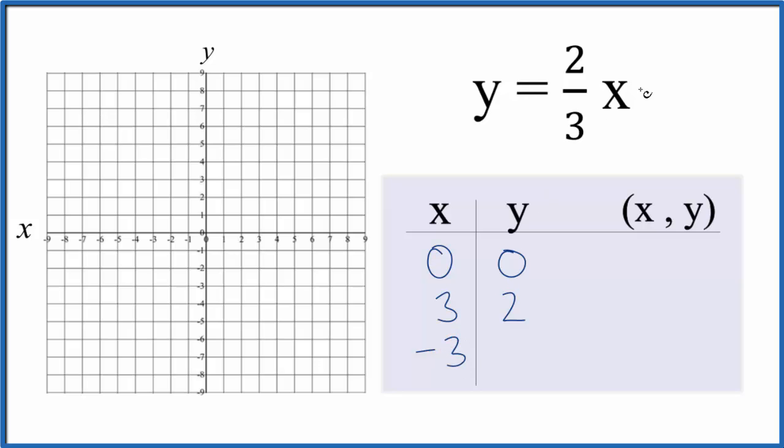We could say negative 3. 2/3 times negative 3, that's just negative 2. So these are the points that we'll graph for the linear equation y equals 2/3 x. So we'll start out 0, 0. That's right here.